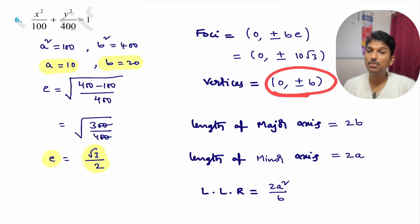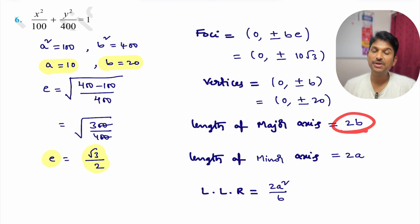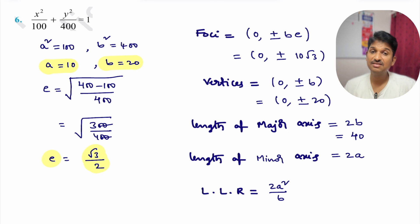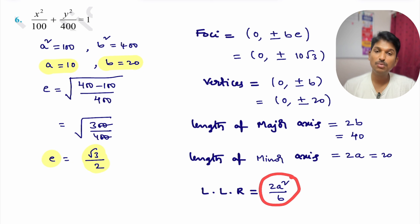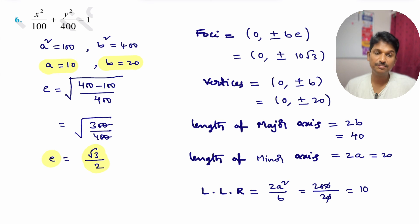Vertices formula (2nd type): (0, ±b) = (0, ±20). Length of major axis = 2b = 2×20 = 40. Length of minor axis = 2a = 2×10 = 20. Length of latus rectum = 2a²/b = 2×100/20 = 200/20 = 10. So length of latus rectum for this problem is 10.